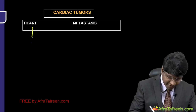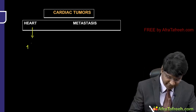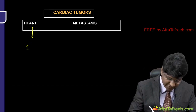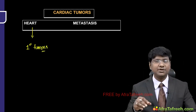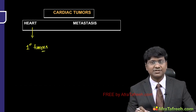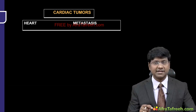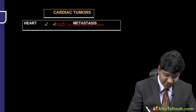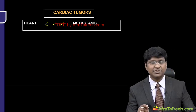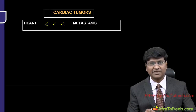Primary tumors are those which originate within the heart. Tumors arising within the heart are called primary tumors. Whereas tumors which come into the heart from external organs are called metastatic tumors. Between these two, the primary tumors are uncommon — it is the metastatic tumors which are far more common than the primary tumors of the heart.